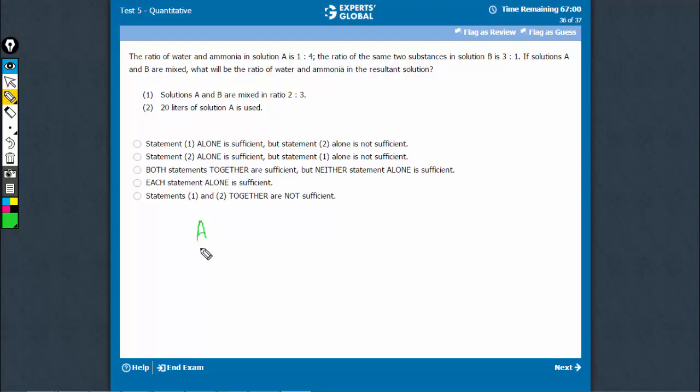Solution A has water and ammonia in ratio 1:4, so water is 1 out of 5 parts, which is 20%. In solution B, water is 3 out of 4 parts, which is 75%. The question asks: when these two are mixed, what is the ratio of water and ammonia in the resultant solution?